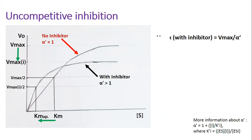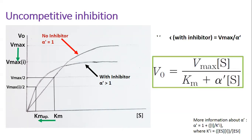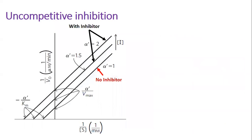On the Michaelis-Menten plot, you can see that uncompetitive inhibitors decrease V-maximal and decrease the apparent Michaelis constant, because less substrate is needed to reach half of the reduced V-maximal. The Michaelis-Menten equation taking into account the factor alpha-prime looks like this. On the Lineweaver-Burk plot, the presence of uncompetitive inhibitors produces parallel lines. The y-intercept increases, indicating lower V-maximal, and the x-intercept decreases, showing that the apparent Michaelis constant is reduced.